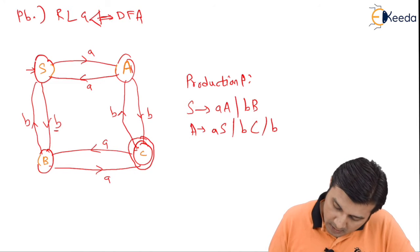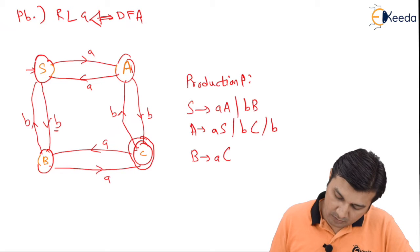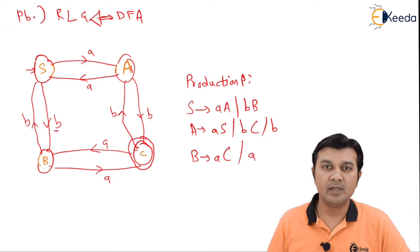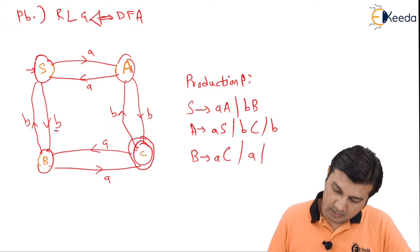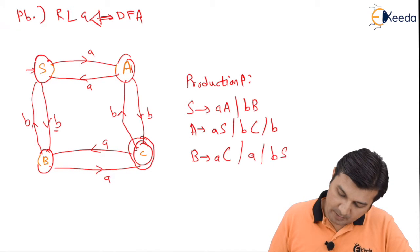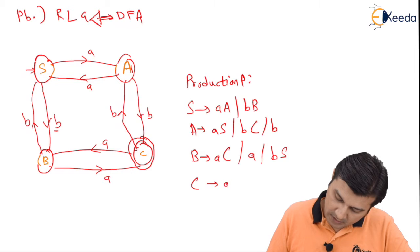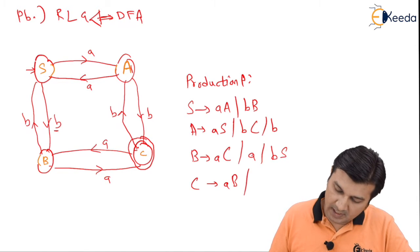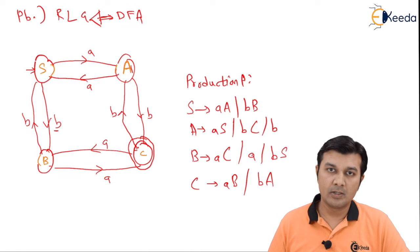B on small a goes to C. Similarly, since C is the final state, a will be added. B on small b goes to S. Coming to C, I see that C on receiving a goes to B, so I say C gives aB, which is in the right linear form, and C on receiving b goes to A.